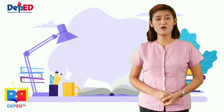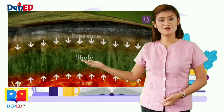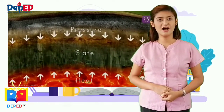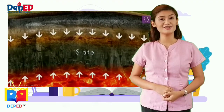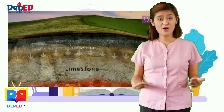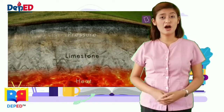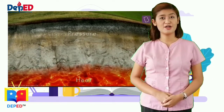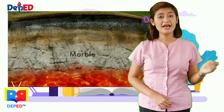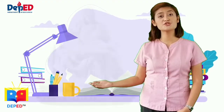Lastly, metamorphic rocks are formed from other rocks that are changed because of heat or pressure. Earth movements can cause rocks to be deeply buried or squeezed. As a result, the rocks are heated and put under great pressure, thus forming metamorphic rocks. An example is marble, which is used as a sculptural material.